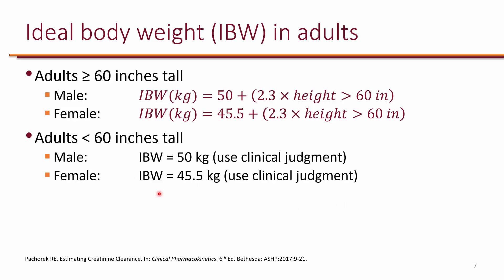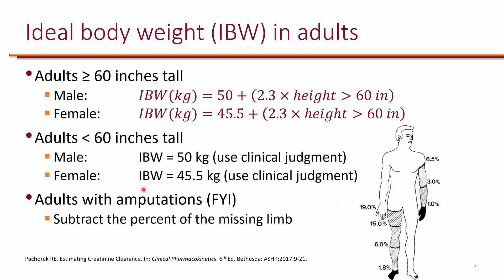For patients who have had amputation, you can use a reference chart to subtract from the ideal body weight whatever limb they're missing. For example, if someone had a below-the-knee amputation, you can subtract 6% of the calculated ideal body weight. These numbers are just for your reference, so you do not need to memorize these percentages for patients with amputation.